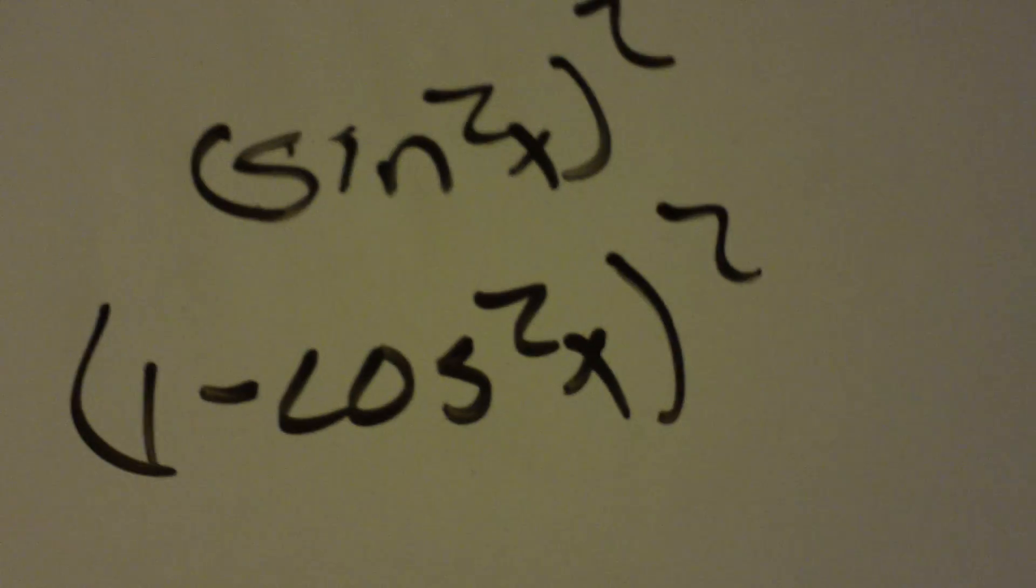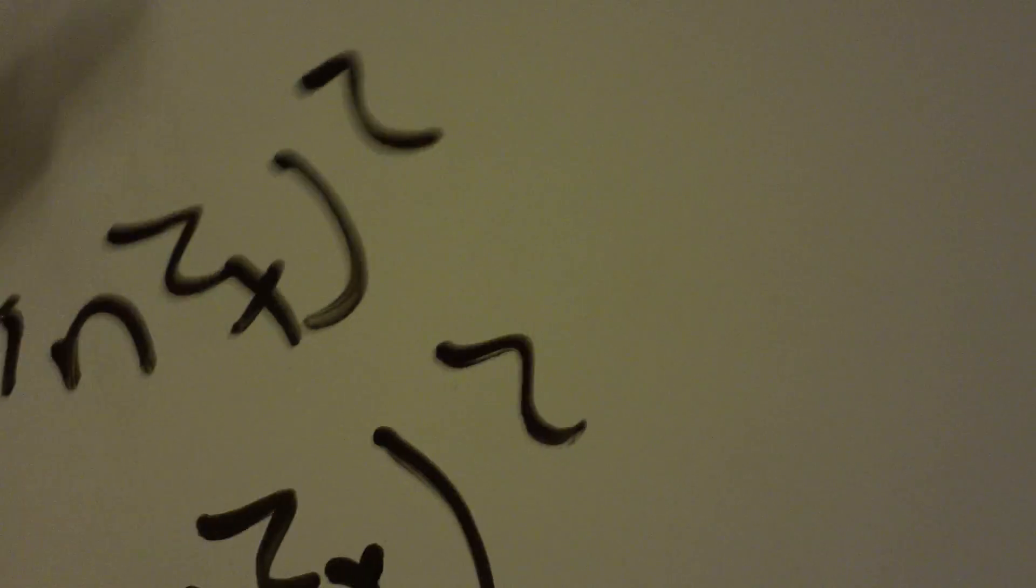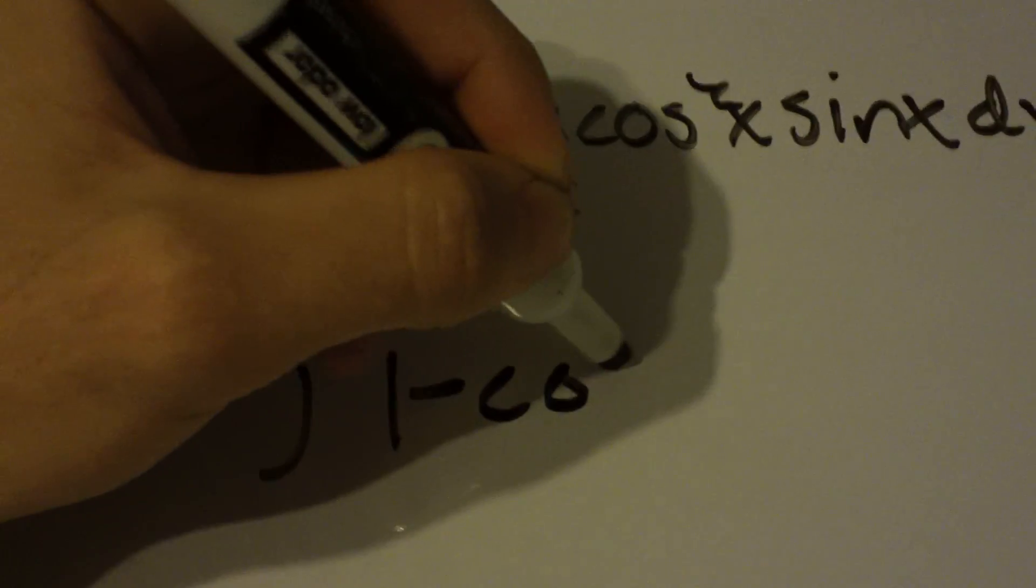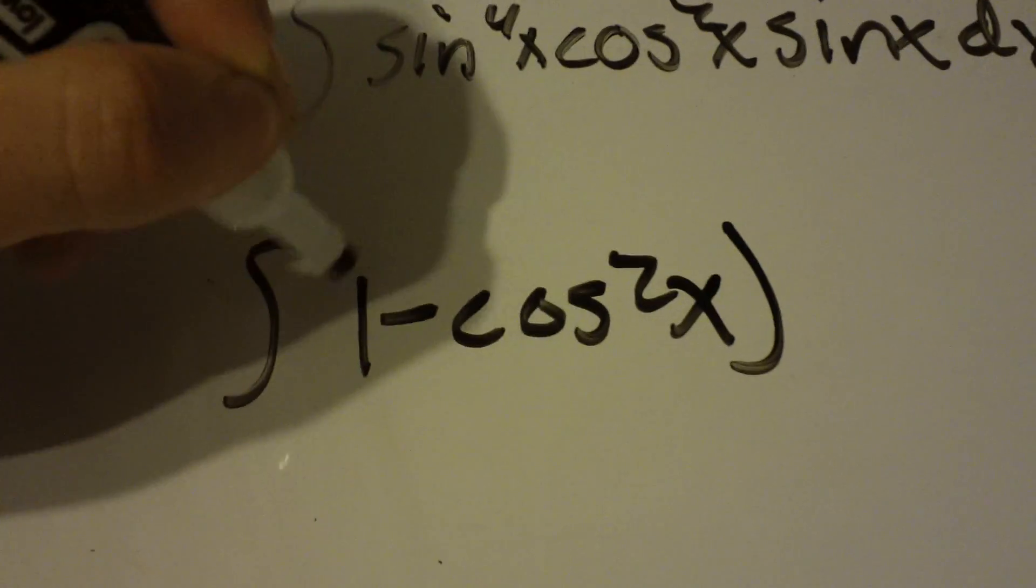So all you would do here is that and that is the same thing. So, let's do that, and then we can use our u substitution in a second. So, integral, one minus cosine squared x squared, just like that, times cosine squared x sine x dx.